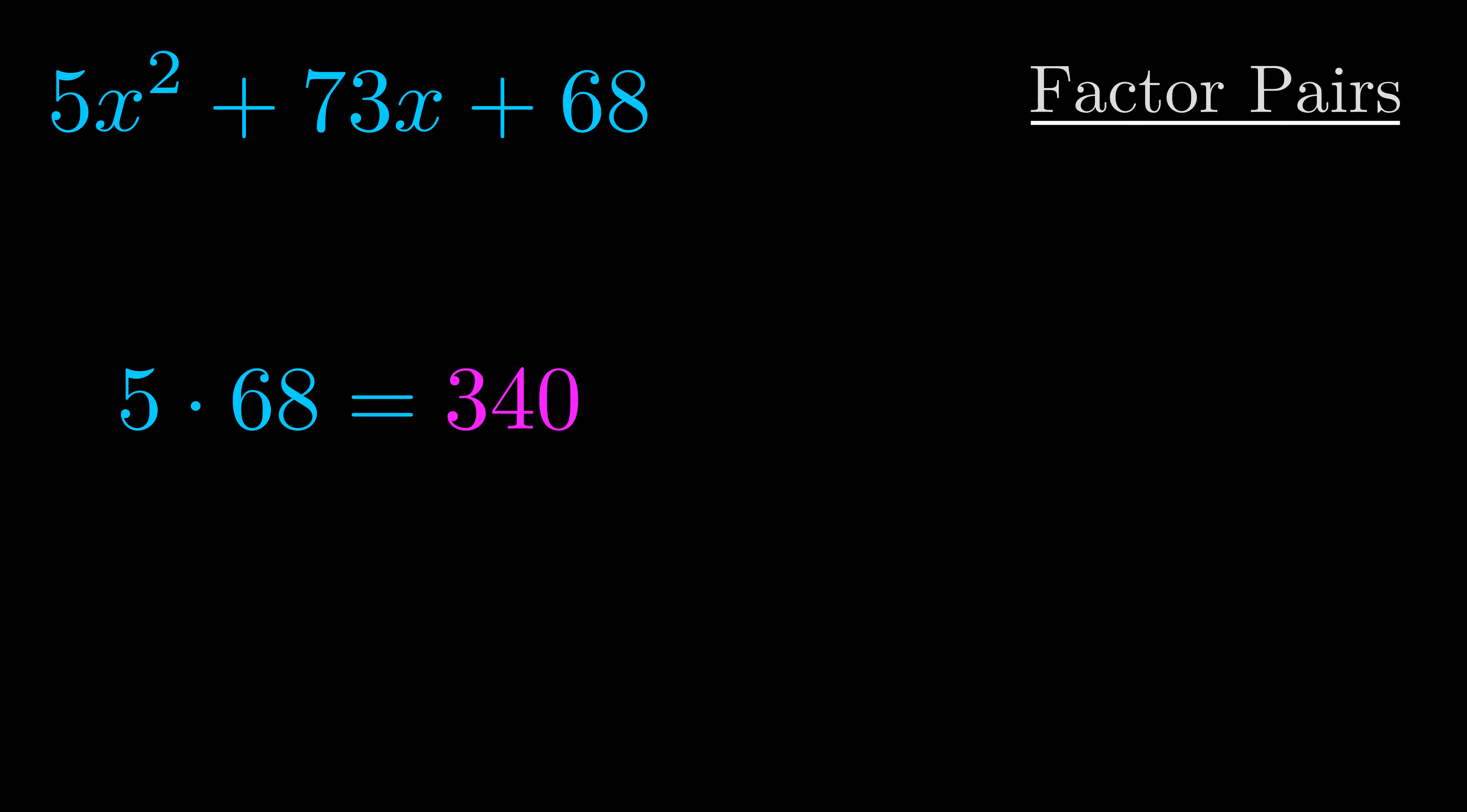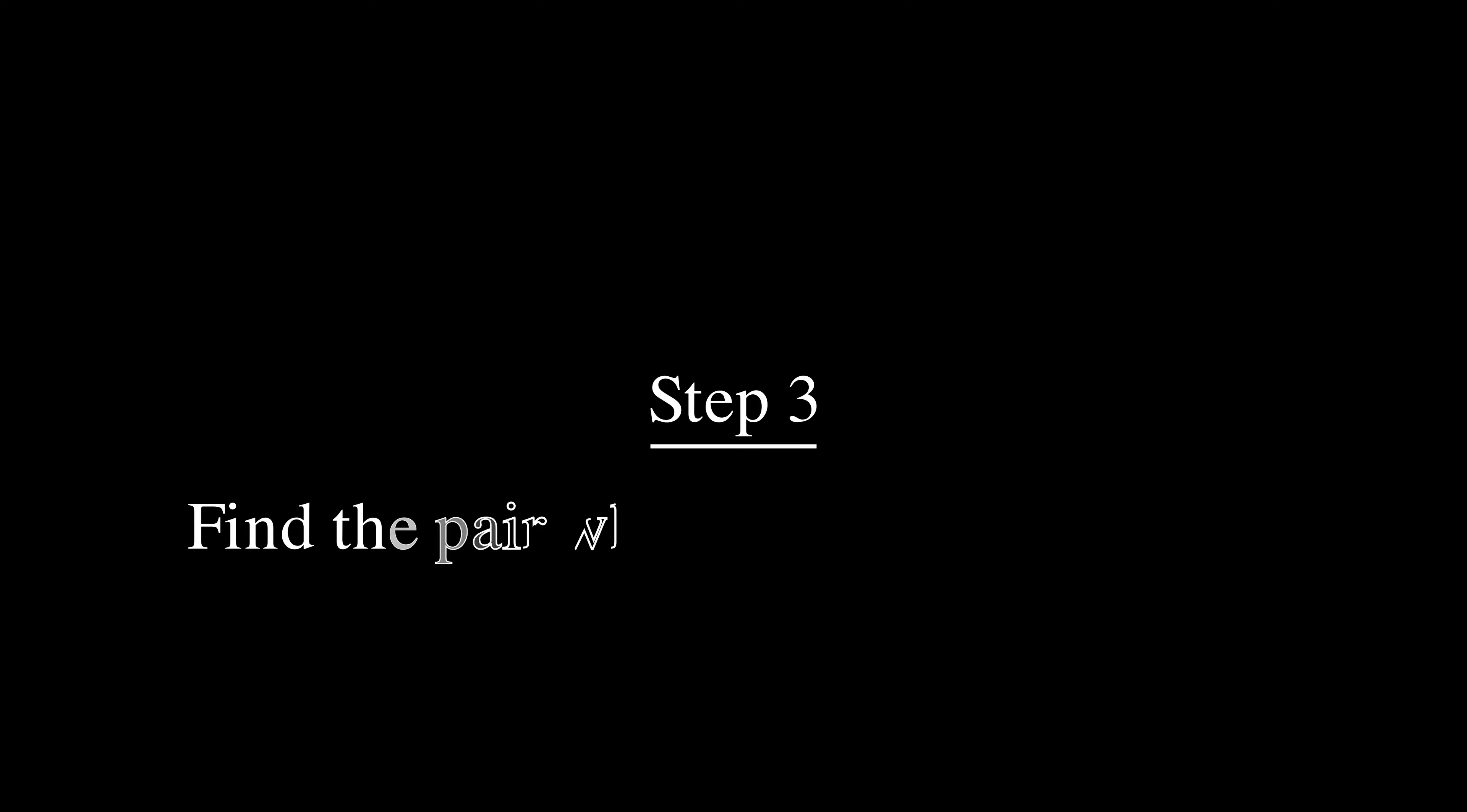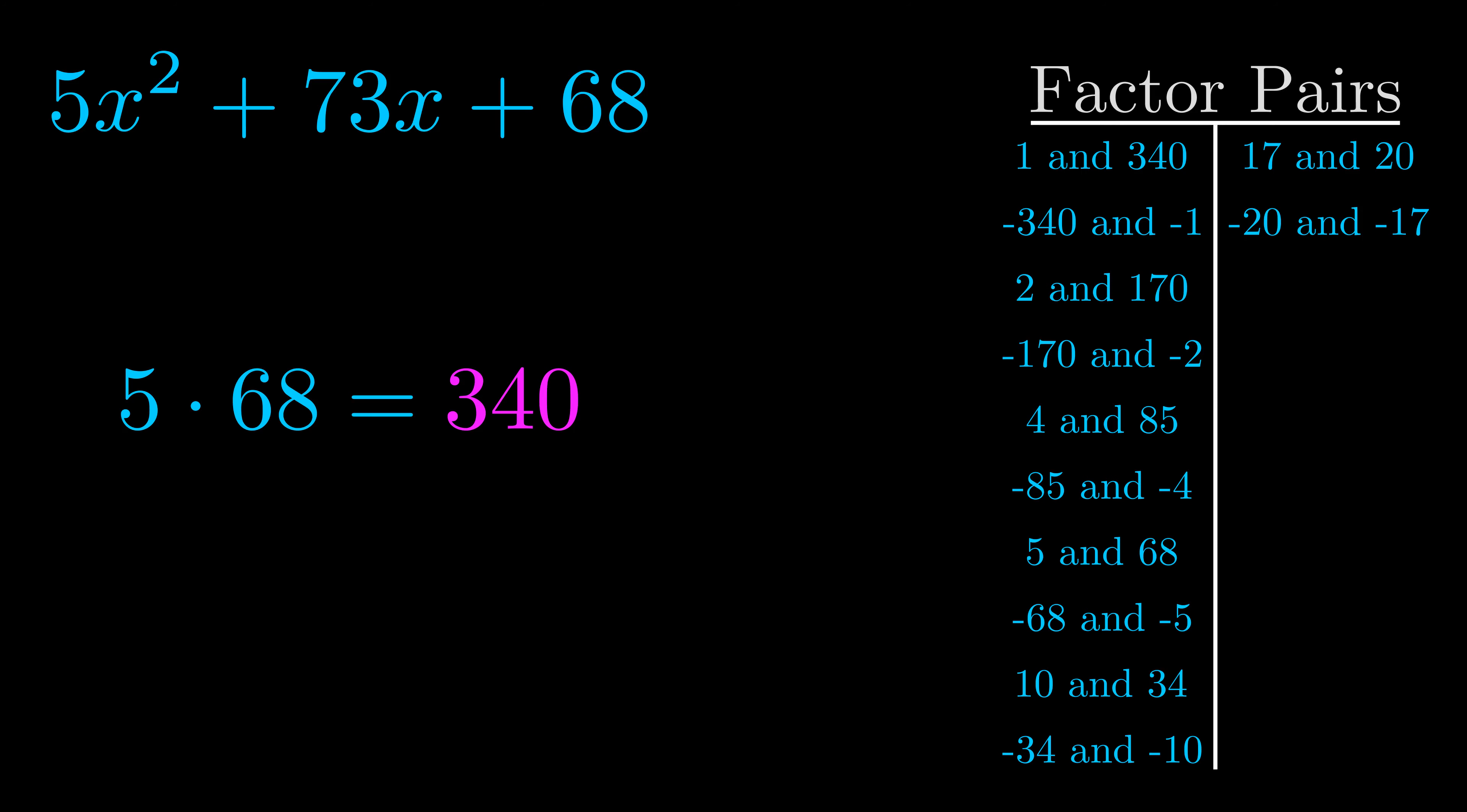Okay, here's what I came up with. Now once you have these factor pairs, the goal is to find which of these pairs adds to the b value. The b value is the coefficient on the x term, that's the middle term, the one that we haven't done anything with yet.